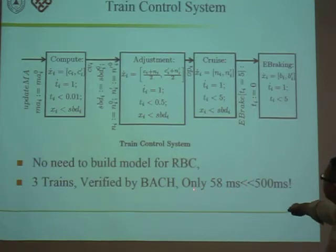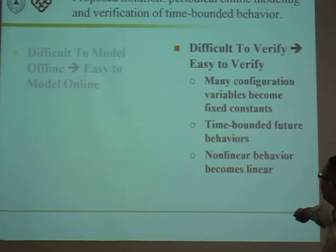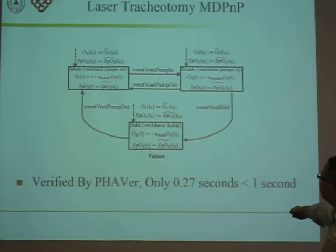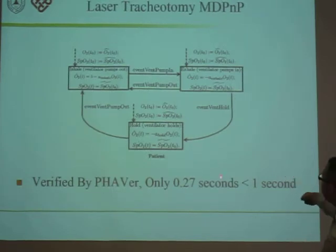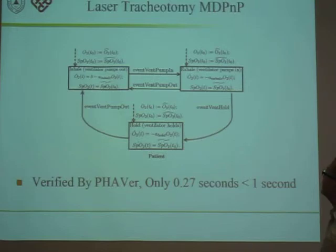For a train control system, we can finish verification within 58 milliseconds. And for laser tracheotomy and DPMT, we can finish it within 0.27 seconds.